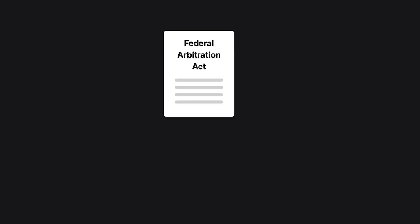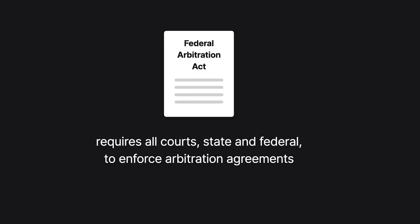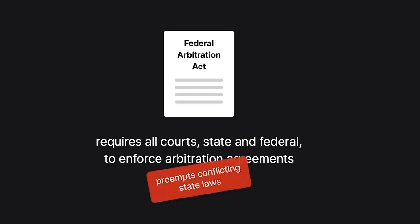The Federal Arbitration Act requires all courts, state and federal, to enforce arbitration agreements. The Act preempts conflicting state laws.